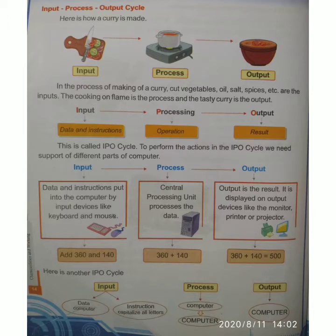Here is how a curry is made. In the process of making a curry, cut vegetables, oil, salt, spices, etc. are the inputs. The cooking on flame is the process, and the tasty curry is the output.